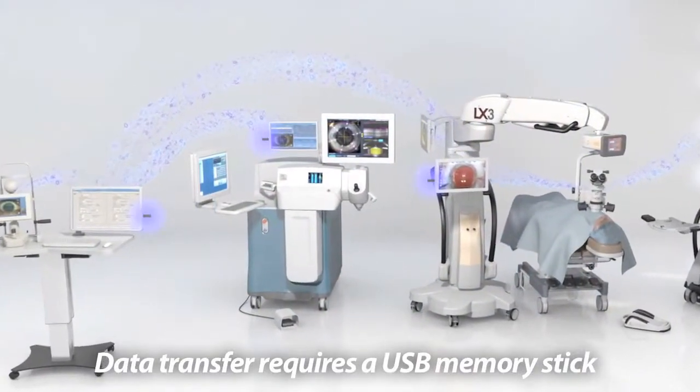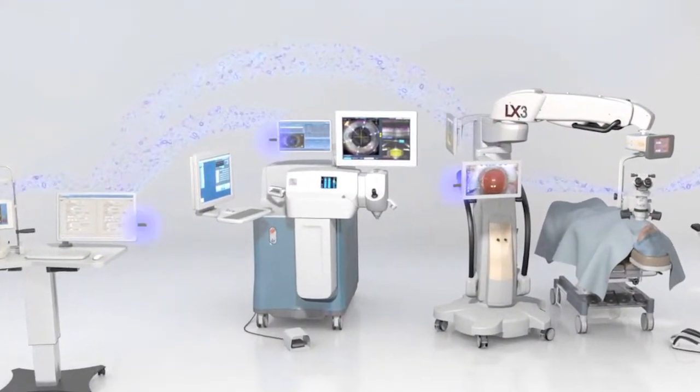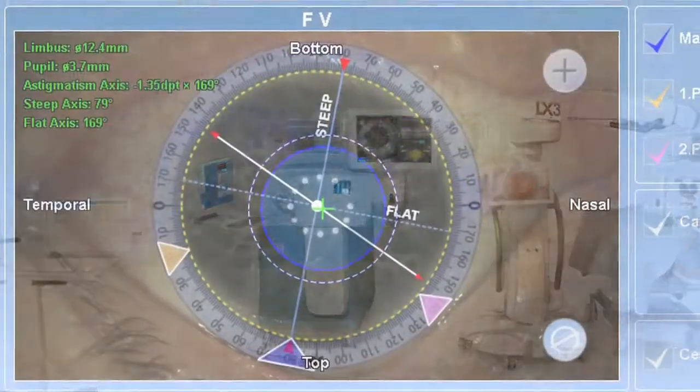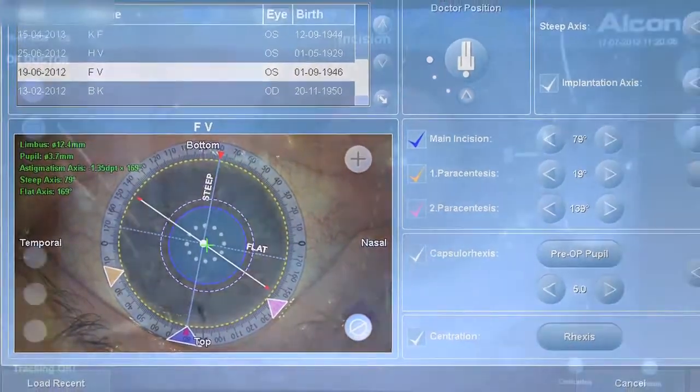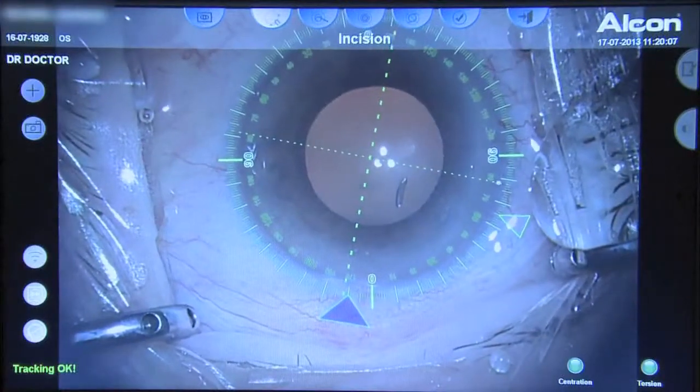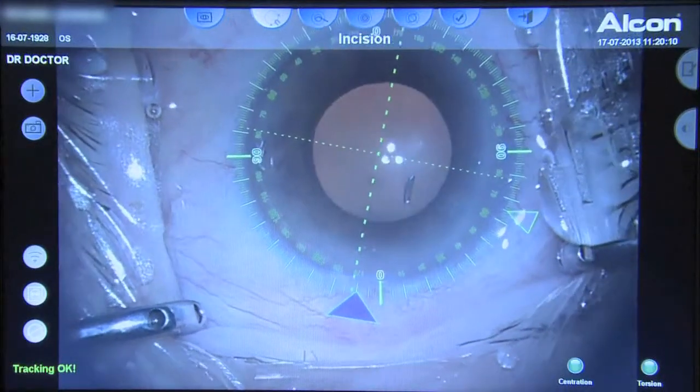During the execution phase of the procedure, using the reference image as a fingerprint, the Veryon digital marker allows surgeons to position all incisions and alignment in real time while accounting for the variable impact of cyclo rotation.